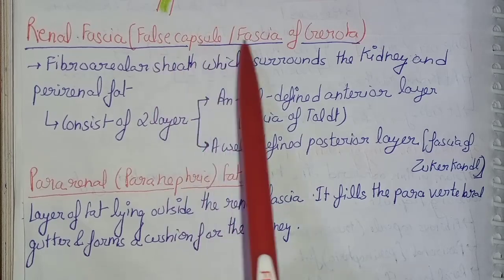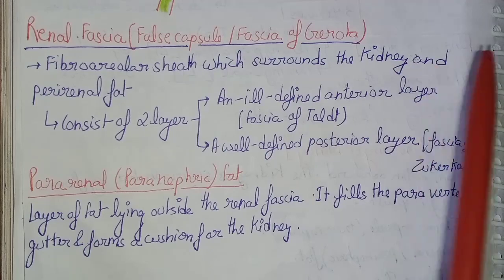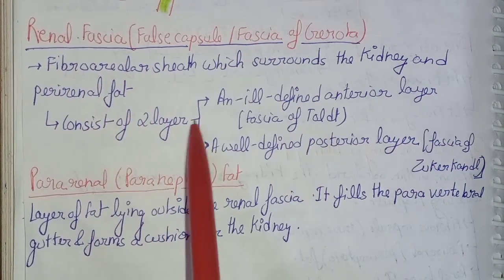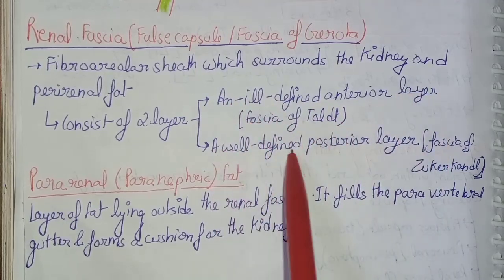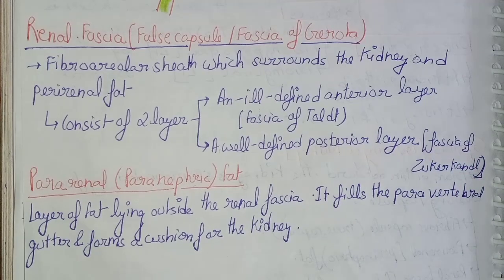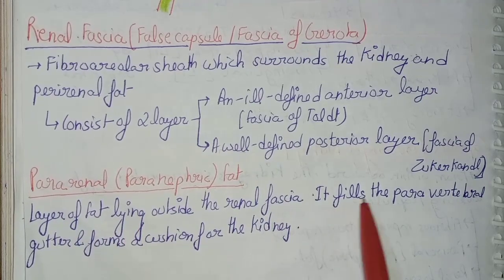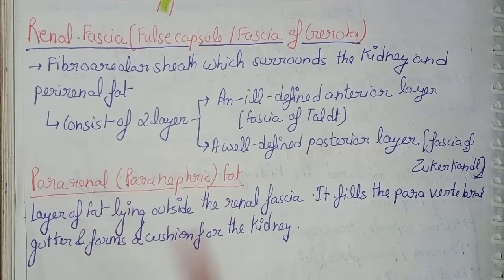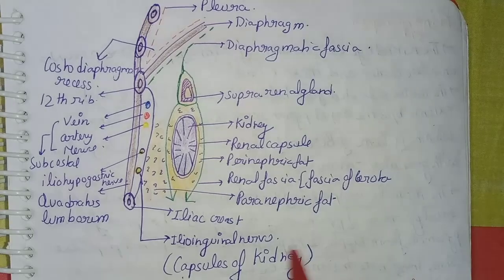The renal fascia, also called the false capsule or fascia of Gerota, is a fibroareolar sheath that surrounds the kidney and the perirenal fat. It consists of two layers: an ill-defined anterior layer (fascia of Toldt) and a well-defined posterior layer (fascia of Zuckerkandl). The pararenal or paranephric fat is a layer of fat lying outside the renal fascia; it fills the paravertebral gutter and forms a cushion for the kidney.